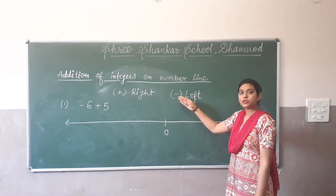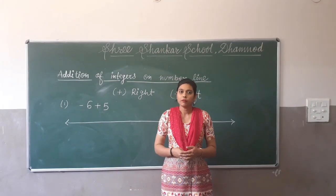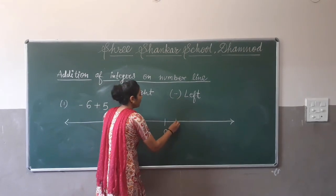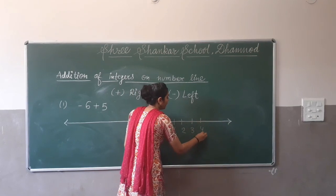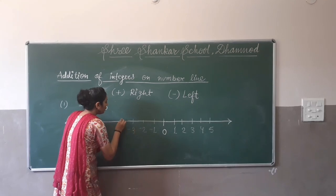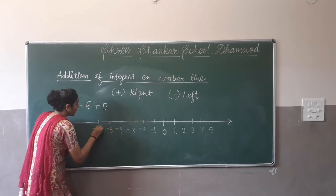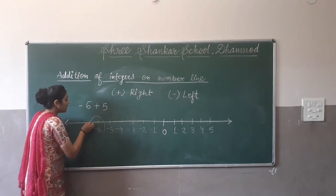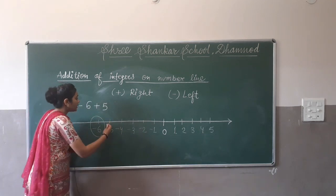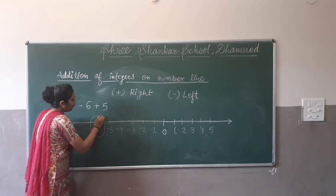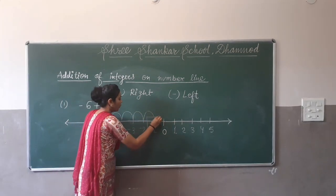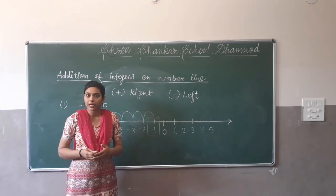Suppose we have an example: minus 6 plus 5. First, we will draw a number line with the center represented by 0. Positive numbers are on the right side and all negative numbers are on the left side, as shown on the board. The first number is minus 6, so we start at minus 6. The plus sign shows we jump to the right side, so we make 5 jumps: 1, 2, 3, 4, and 5. So the required answer is minus 1. That is the process of how we represent integers on the number line.